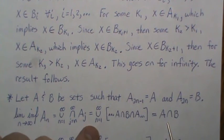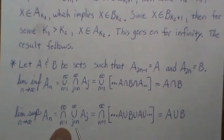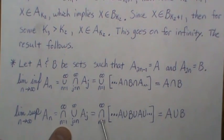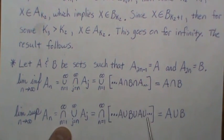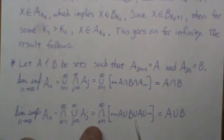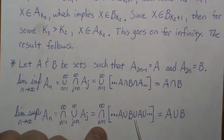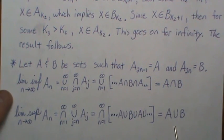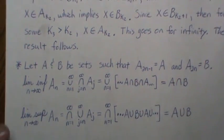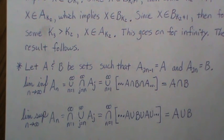For the limit supremum, for each n we take the union of alternating A's and B's — regardless of where we start, we always get A ∪ B. Intersecting infinitely many copies of A ∪ B gives A ∪ B. So the limit infimum is A ∩ B and the limit supremum is A ∪ B. That's all for part one; pages three and four are in part two. I hope you enjoyed this — please like and subscribe so you don't miss the next one.